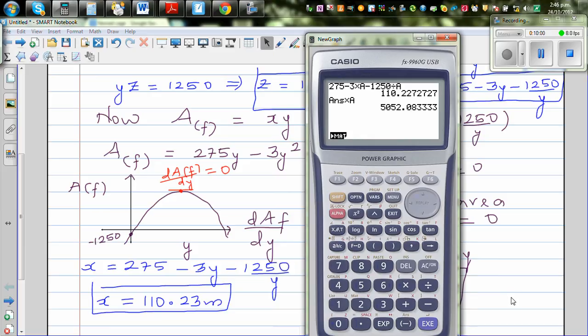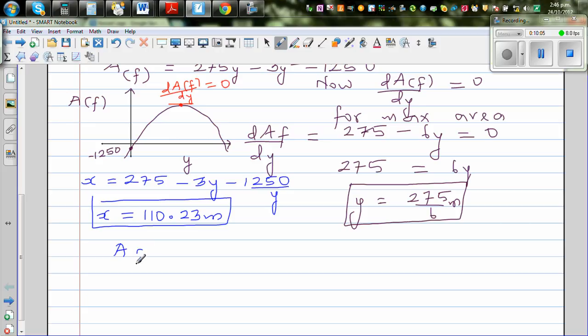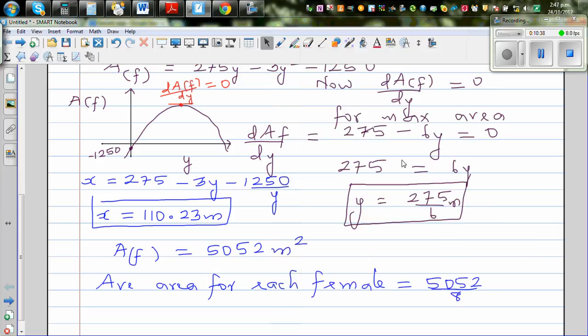So this X is 110.23 meters, rounded to 2 decimal places. The maximum area would be X times Y, so this times alpha A would give me 5052. So the area of the female cage, A_f, would be 5052 meters squared.